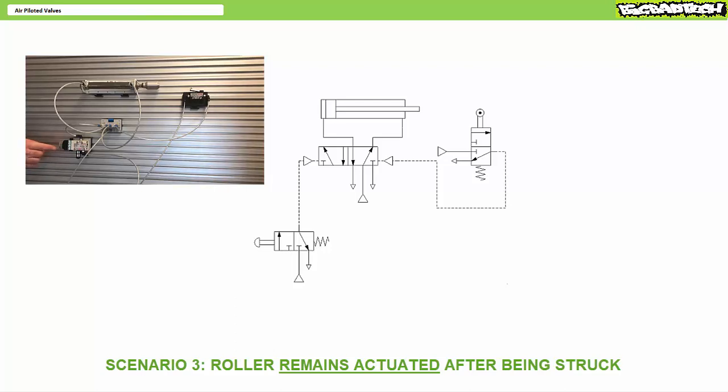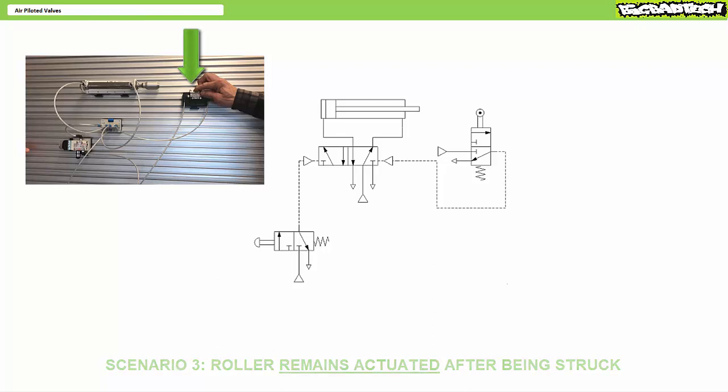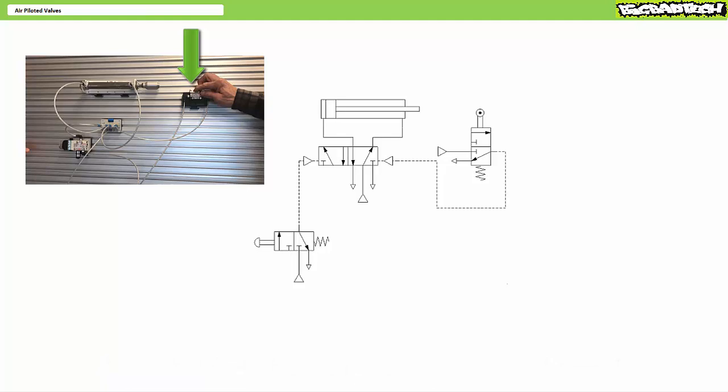Most likely you'd observe the following: when an operator presses push button one, the air pilot shifts the valve so the cylinder extends. At the limits of extension, the rod strikes the roller and shifts the roller operated valve to send a signal to the air pilot on the right-hand side, which shifts the air piloted valve so the cylinder retracts. During retraction, the rod stops striking the roller. However, the sticky roller remains triggered and the roller valve continuously sends a signal to the air pilot on the right-hand side, thus not resetting the system for another single cycle reciprocation.